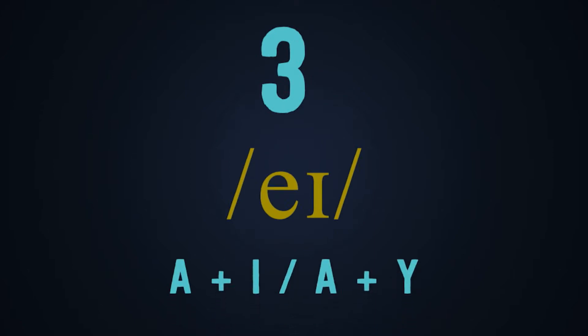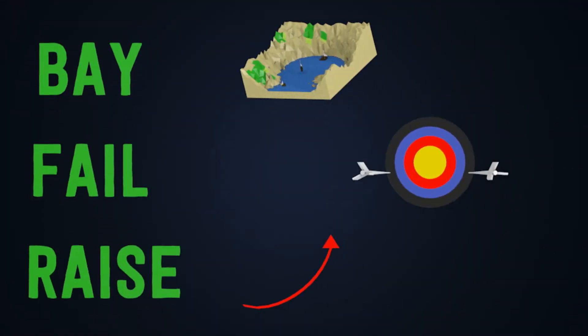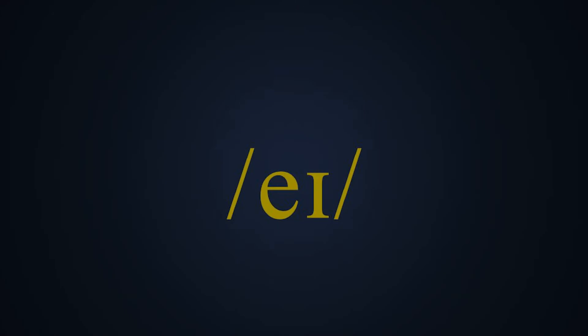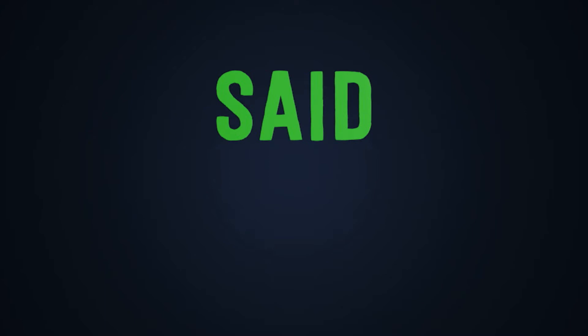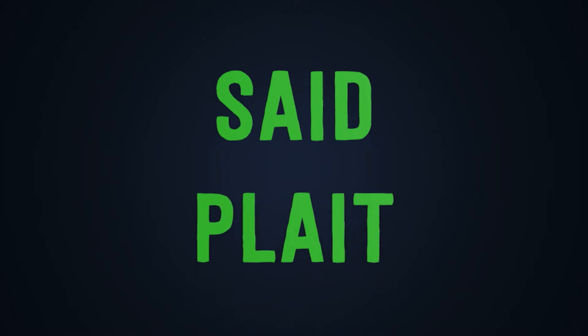Number three: the combination A plus I or A plus Y. Check out the following words: babe, fail, race. When this happens in words, this combination is normally pronounced 'eɪ'. But there are some exceptions, such as in the verb 'said' and in the word 'plaid'. As mentioned, these may not be the only exceptions — if you have other examples, please do not forget to share them.